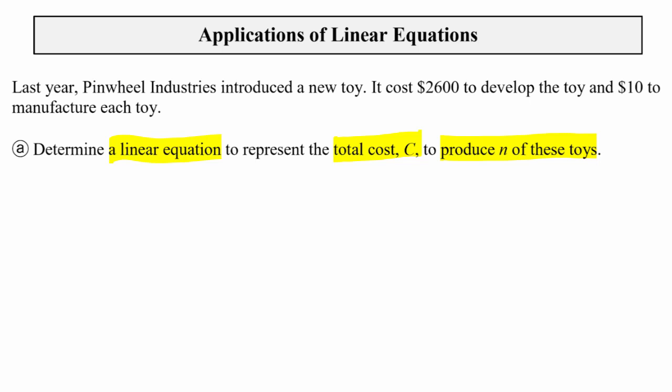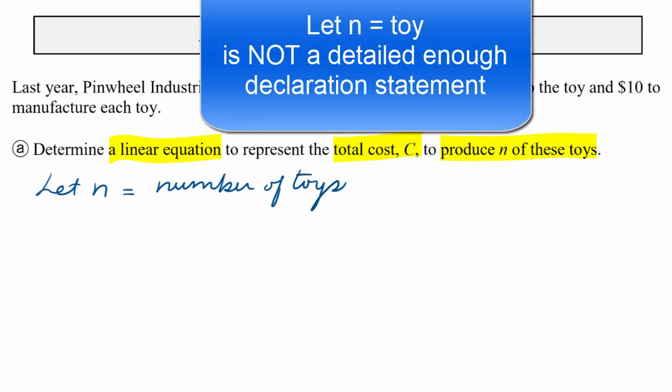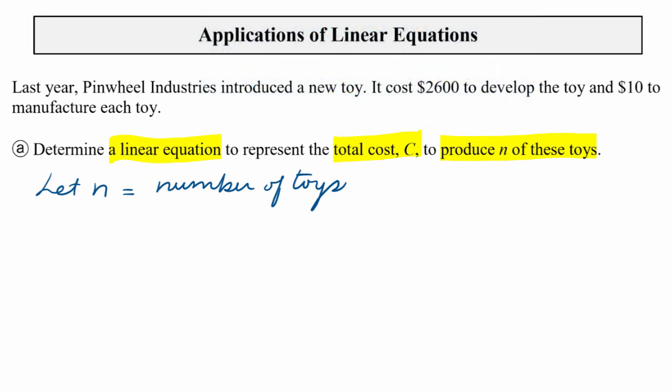So our input variable is n, and n is the number of toys being produced. Notice I didn't write n is a toy because that's not enough detail. You need to tell me what aspect of the toy n represents. Is it cost? Is it size? Is it color? And so here it is number. So it's the number of toys produced.